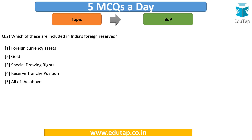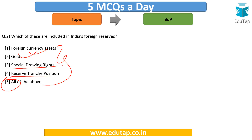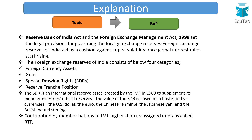Moving to Question 2: Which of these are included in India's foreign reserves? The correct answer is Option 5 — all of the above — that is, foreign currency assets, gold, SDRs, and RTPs. We will discuss these in detail, and there is a value addition for you in the explanation.